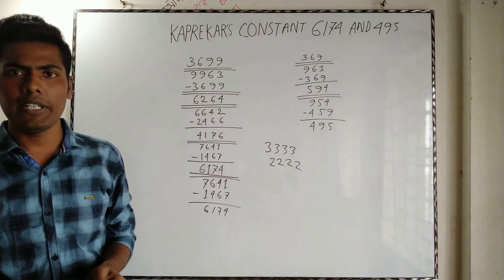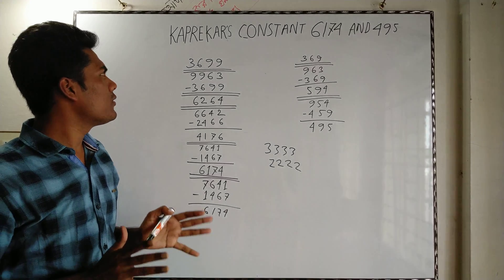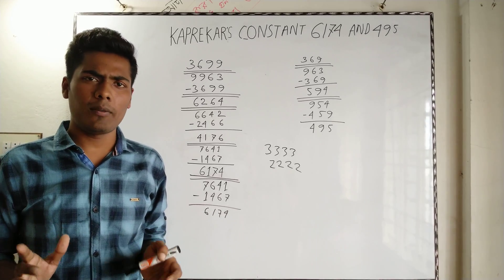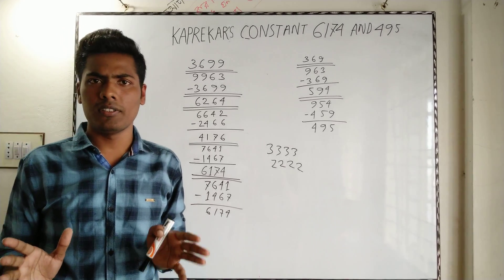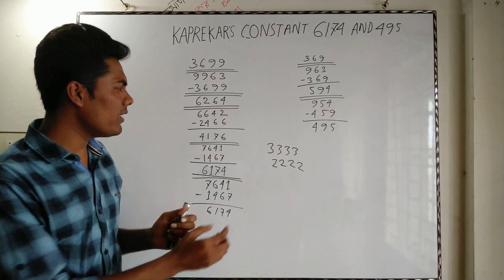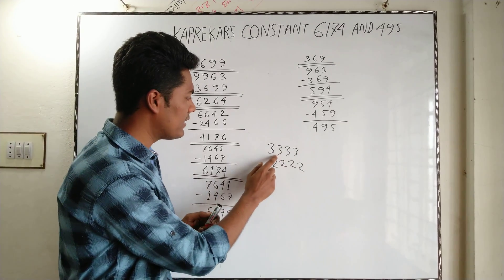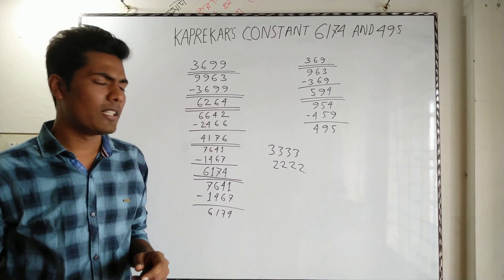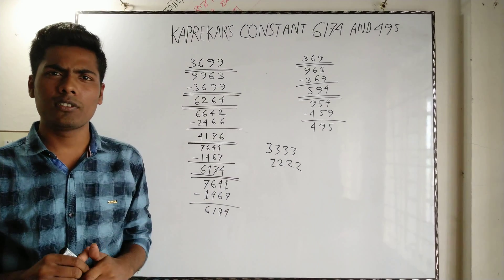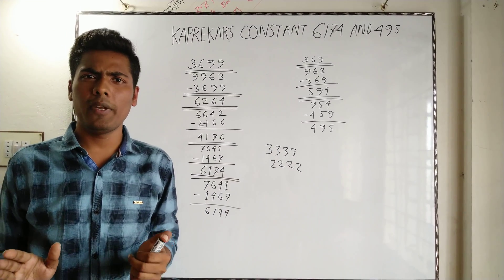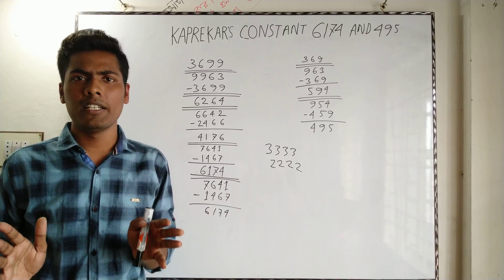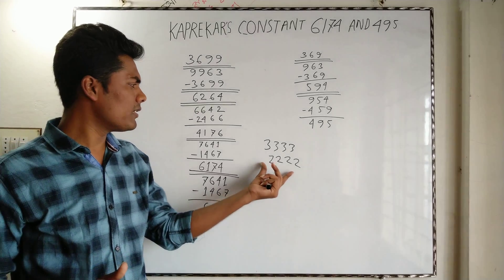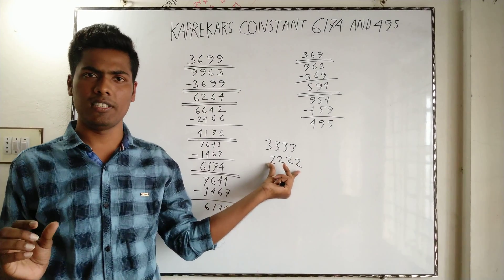First, we need to choose a four-digit number. We can choose any four-digit number, but keep in mind we cannot choose a number where all digits are the same, like 3333 or 2222. We can choose numbers with four different digits, two different digits, two same, or three same and one different — it does not really matter, as long as not all digits are identical.